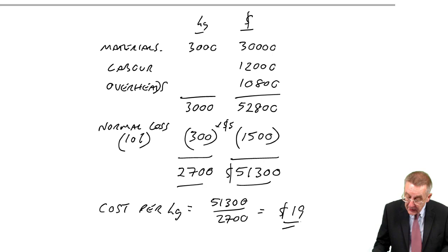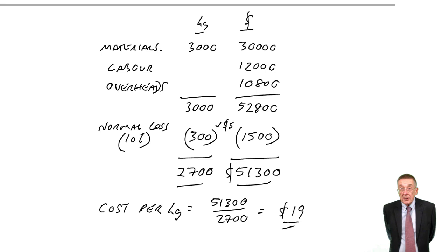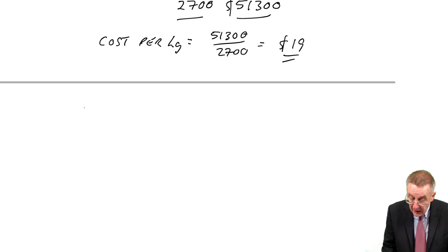So there we are. Normal losses, expected losses, bring into your costings and treat any revenue from them, any scrap of money, effectively as a negative cost. Despite what I've kept saying, I will quickly do a process account to show you how that appears.